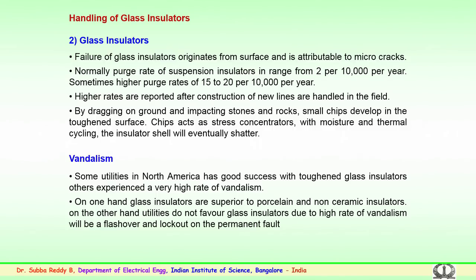Handling of glass insulators during vandalism is a major concern — there are many reports particularly from North America of good success with toughened glass alongside very high rates of vandalism. On one hand glass insulators are superior to porcelain and non-ceramic insulators; on the other hand, utilities do not favor glass insulators due to high rates of vandalism, as there will be a flashover and lockout on the permanent fault. This is one of the major concerns pertaining to glass insulators.